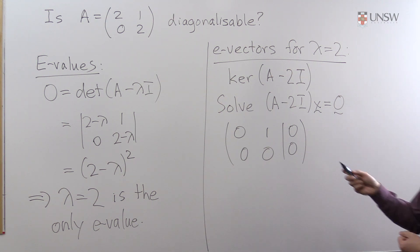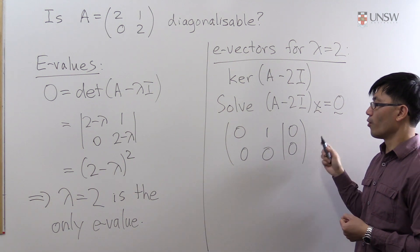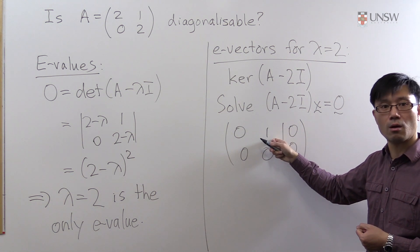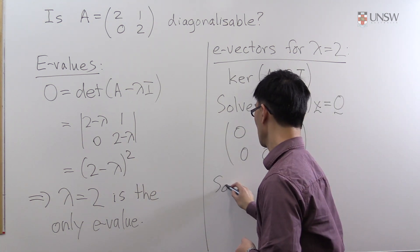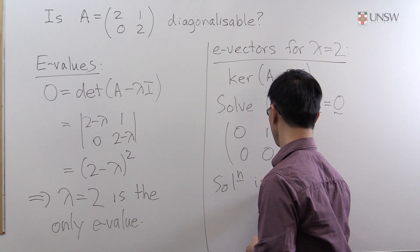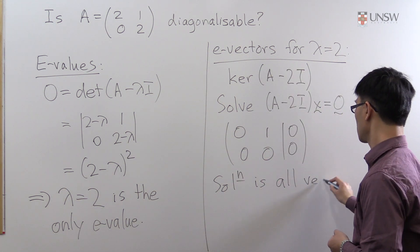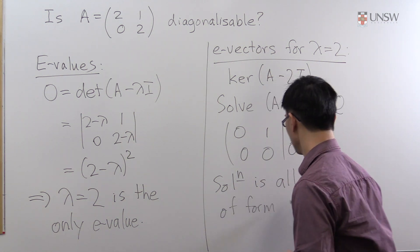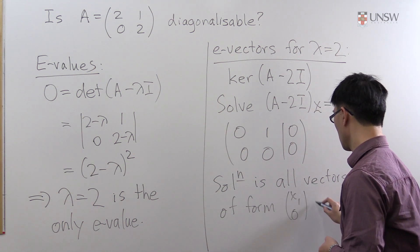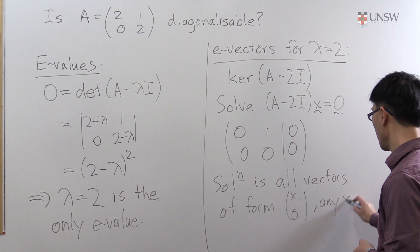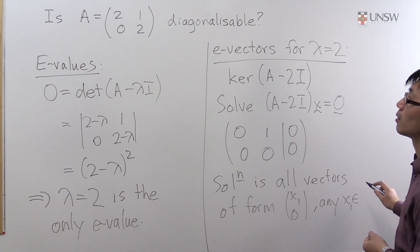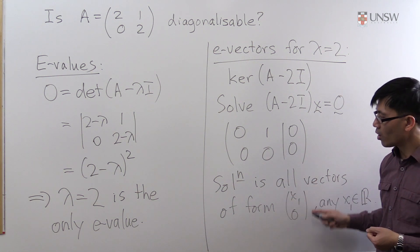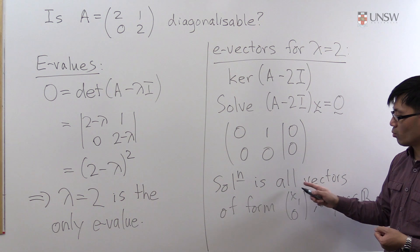And so we see straight away that for this system of linear equations to hold, the second coordinate of x has to be 0. So the solution is all vectors of form (x₁, 0). And this is for any x₁ in the reals. So of course this is a subspace.